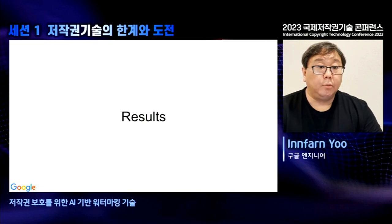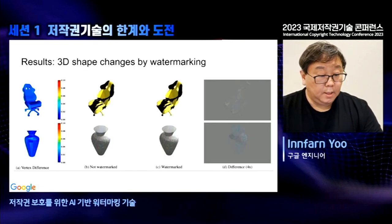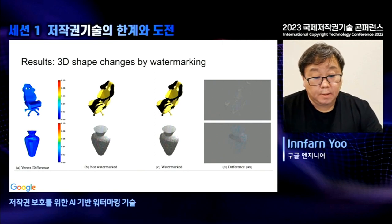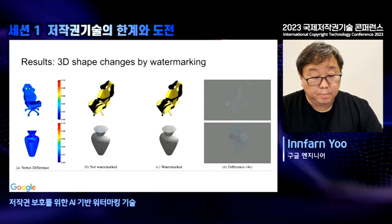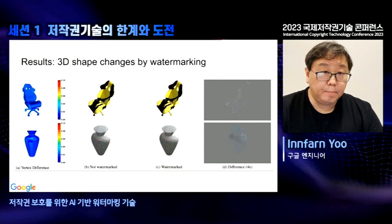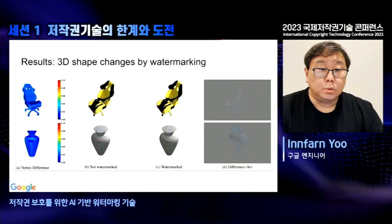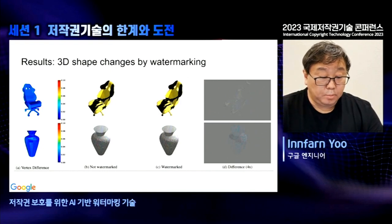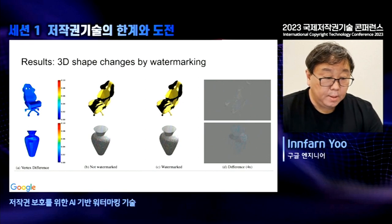Now for the results. This slide shows that 3D shape changes are minimal even after watermarking. Column A shows that the blue color represents mostly up to 2% vertex differences, while red indicates up to 10% changes. As we can see, most vertices are blue — less than 2% vertex change — while messages are still embedded. Columns B and C show rendered images of the mesh, and the difference is not very noticeable. Column D shows the difference map, magnified 4 times, and the difference is pretty minimal.